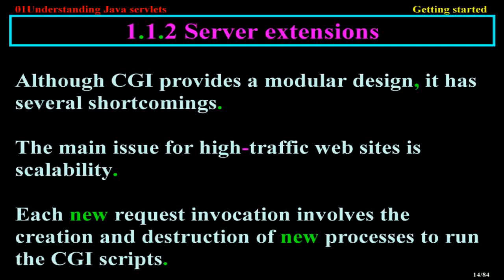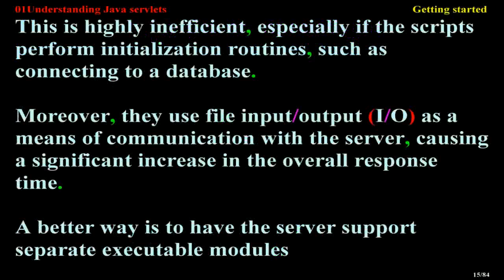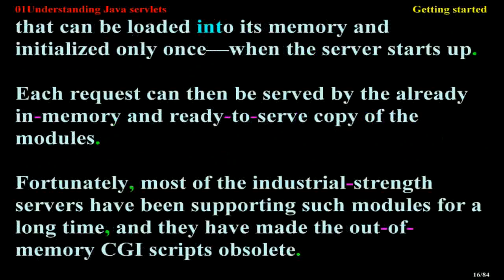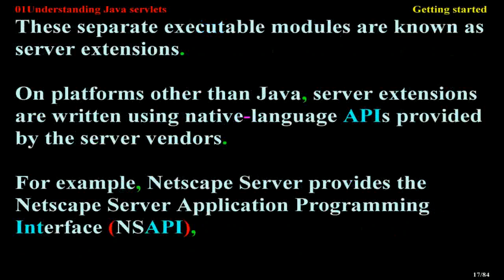Although CGI provides a modular design, it has several shortcomings. The main issue for high-traffic websites is scalability. Each new request's invocation involves the creation and destruction of new processes to run the CGI scripts. This is highly inefficient, especially if the scripts perform initialization routines, such as connecting to a database. Moreover, they use file input/output I/O as a means of communication with the server, causing a significant increase in the overall response time. A better way is to have the server support separate executable modules that can be loaded into its memory and initialized only once when the server starts up. Each request can then be served by the already-in-memory and ready-to-serve copy of the modules.